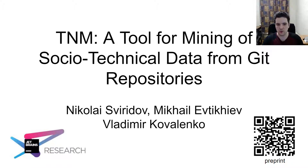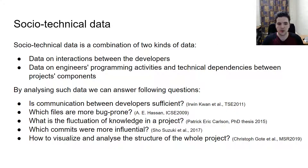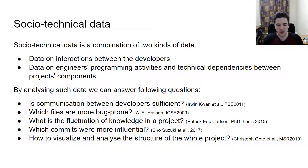First, we need to introduce what social technical data is. Social technical data related to the project is a combination of the data that reflects interactions between developers and data that corresponds to the programming activities performed by engineers and the technical dependencies between various components of the project. Analyzing such data can help project development.